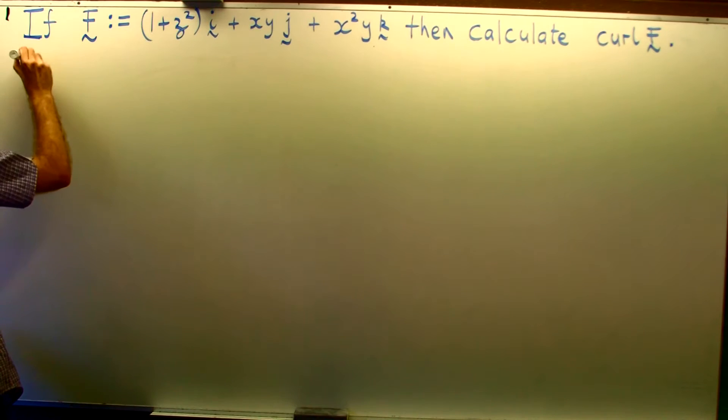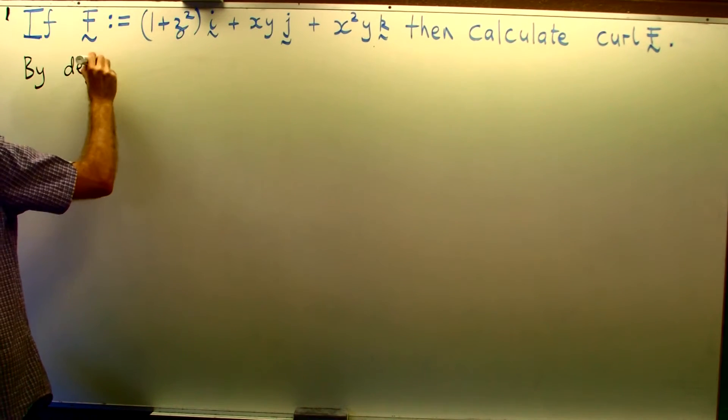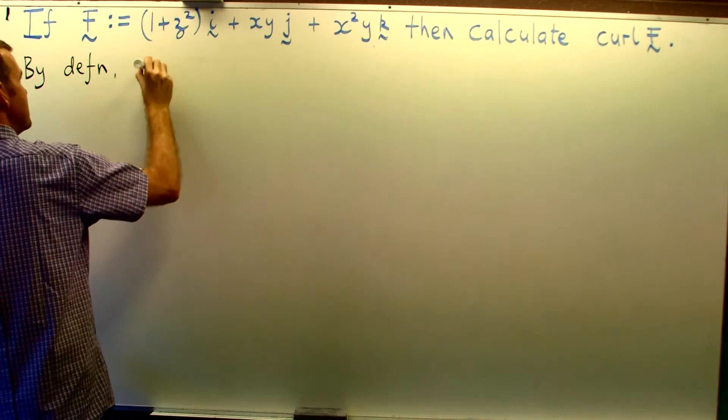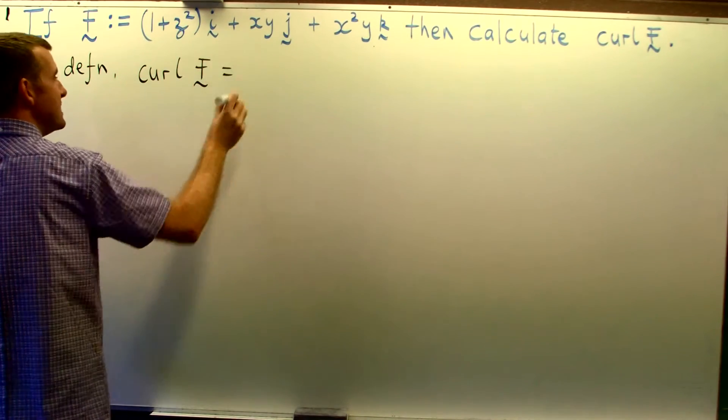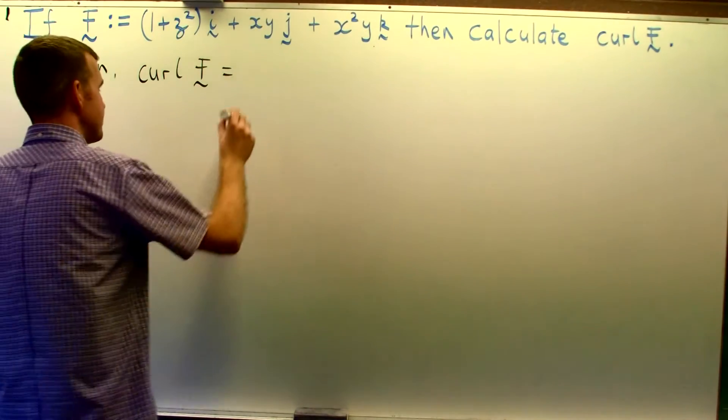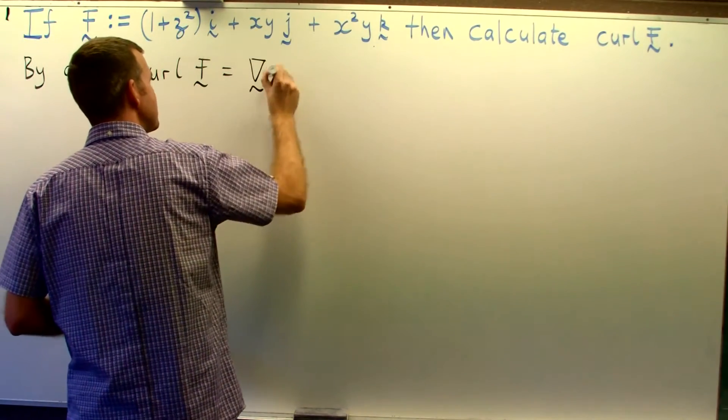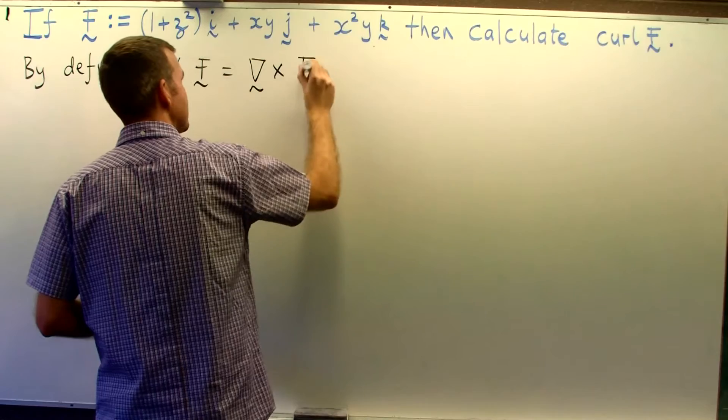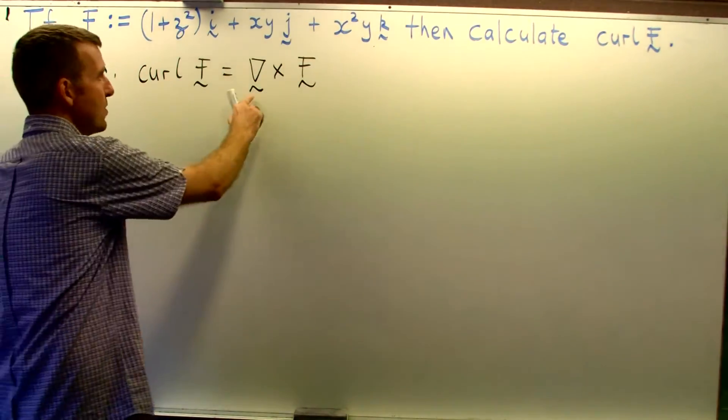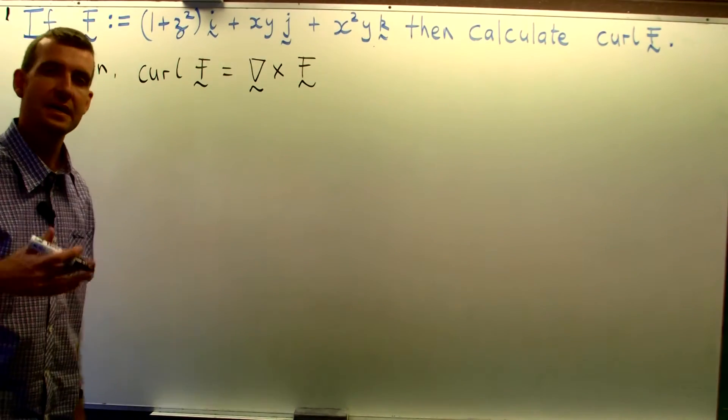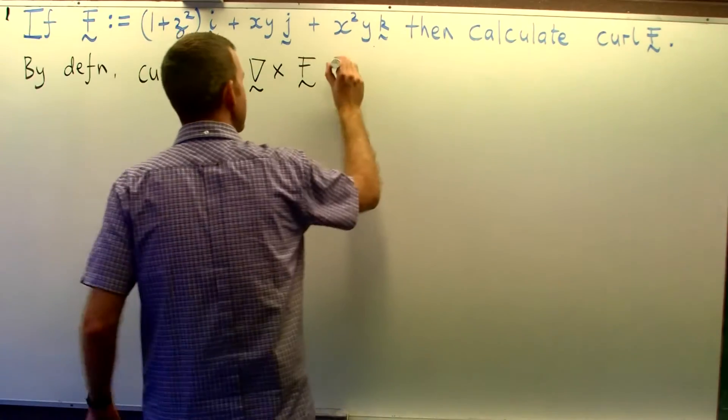Now by definition the curl of a vector field is just the cross product of this symbolic vector with the vector field. Now this symbolic vector is known as the del operator.